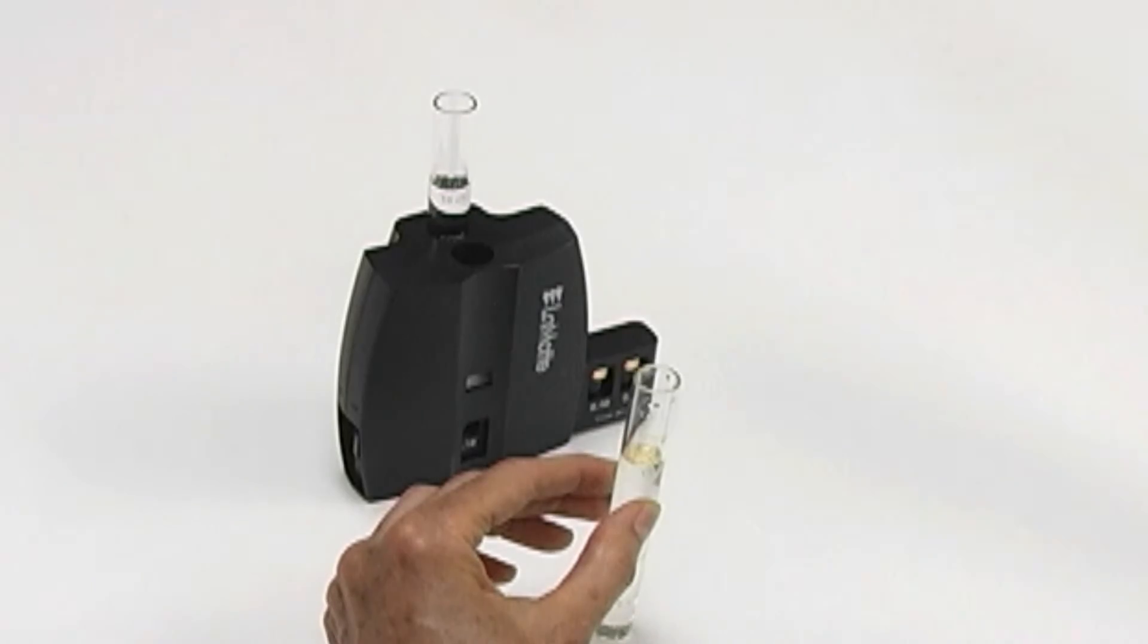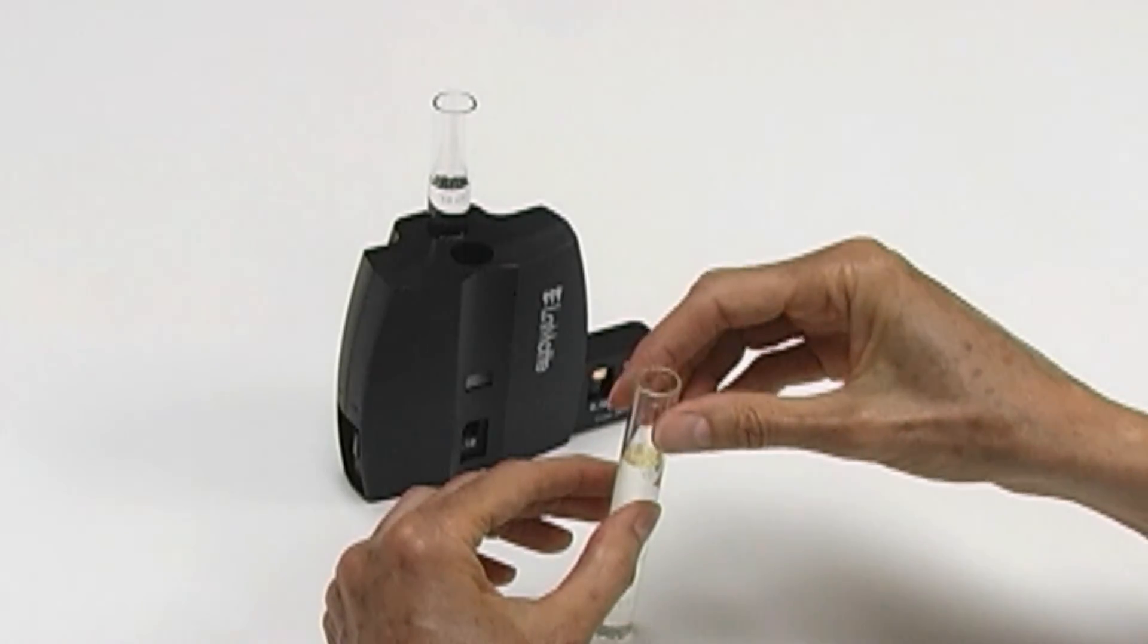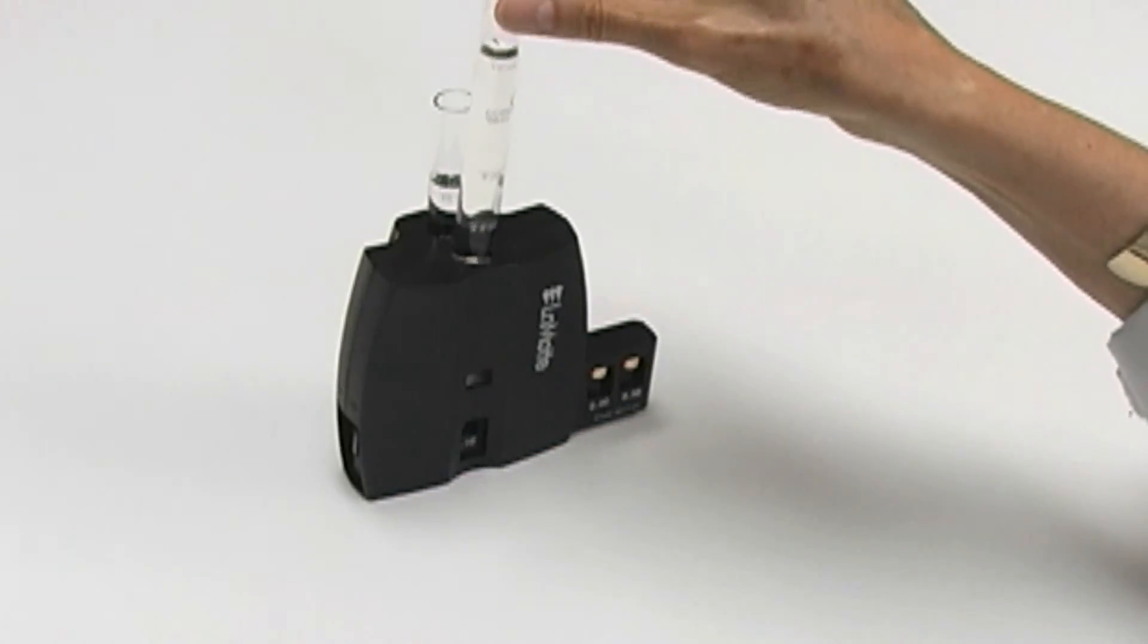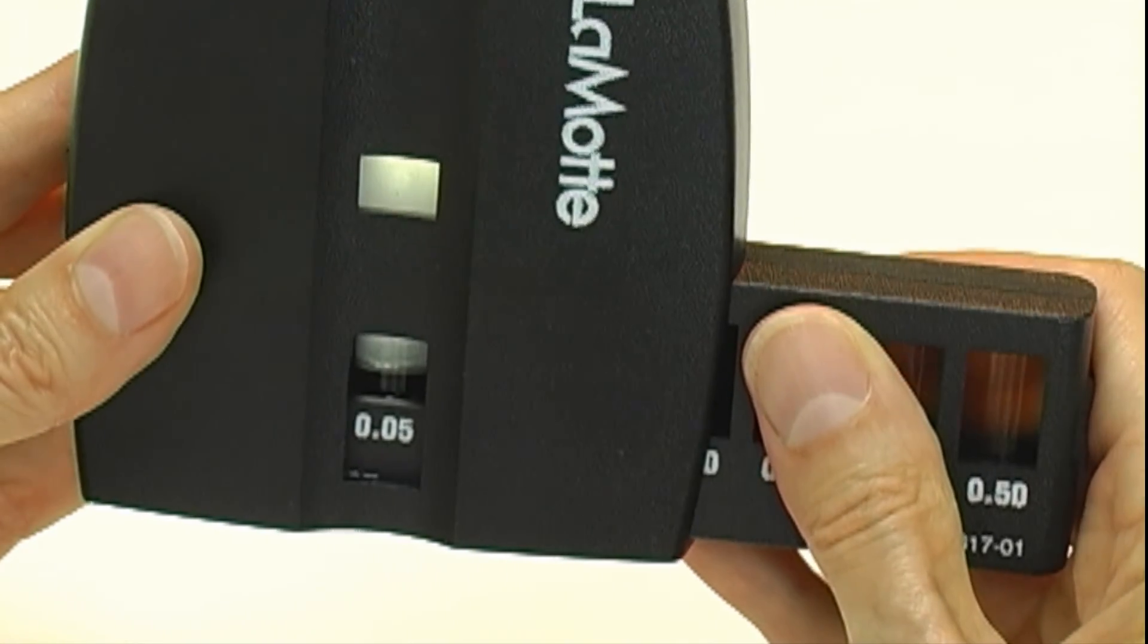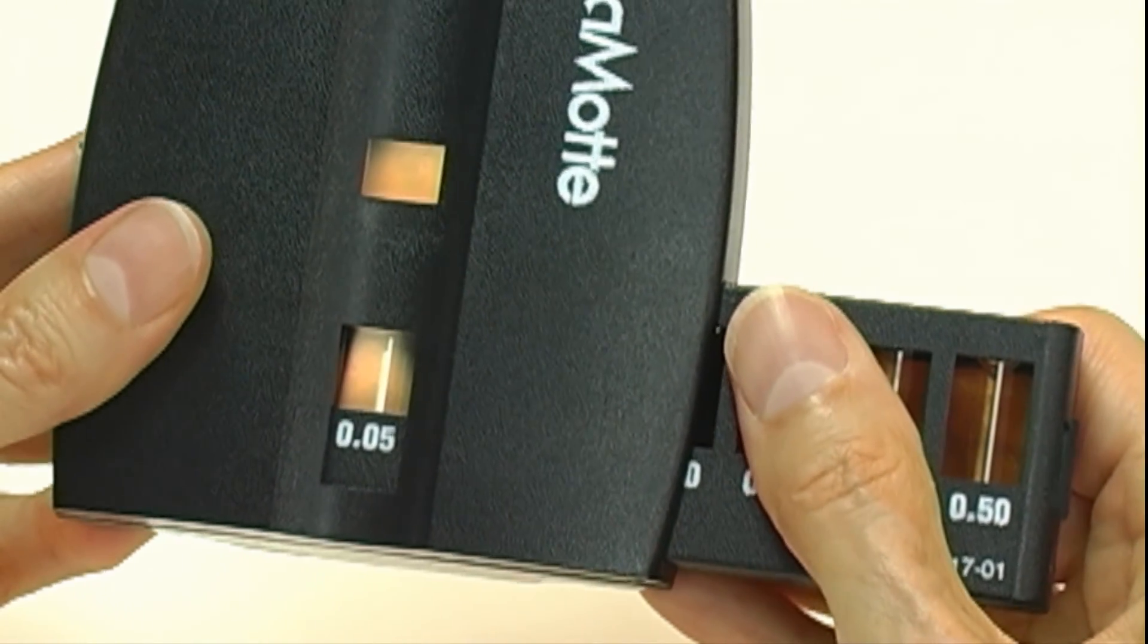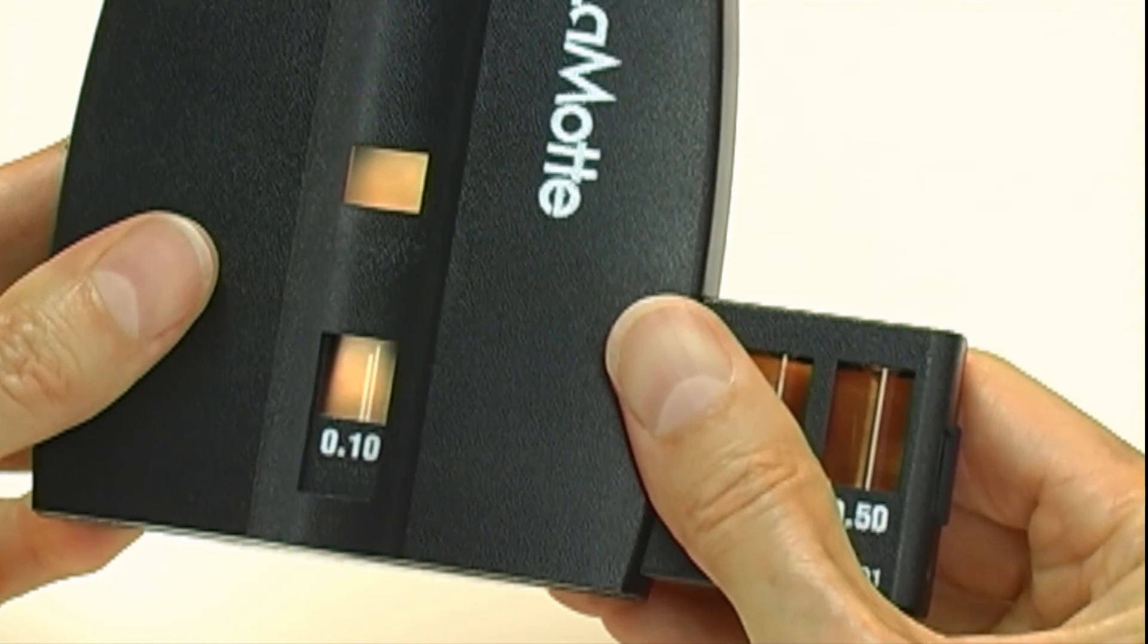Remove the cap from the tube containing the test reaction and insert the tube into the front hole of the viewer. Position the comparator so light shines down and through the uncapped test tubes. Tilt the comparator until the sample and color standards light up, then slide the bar to match the color reaction to a standard.